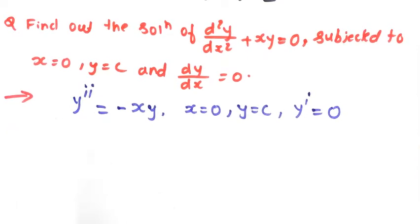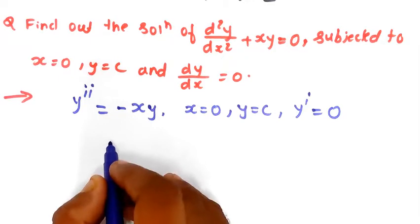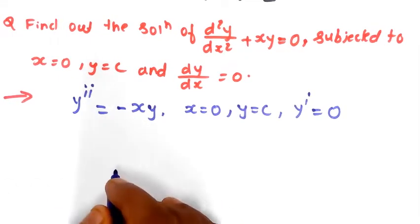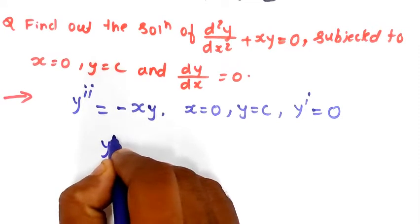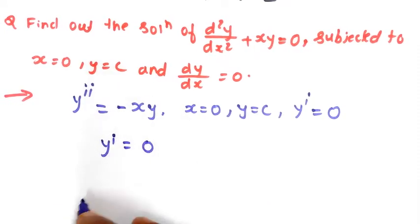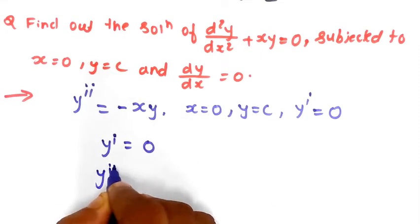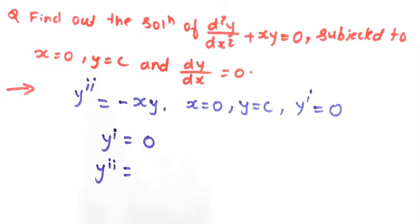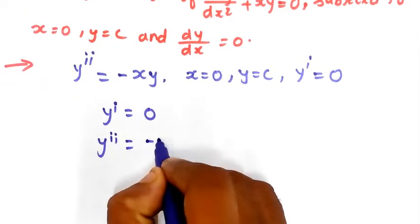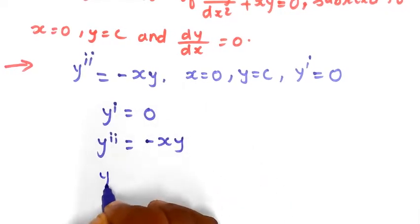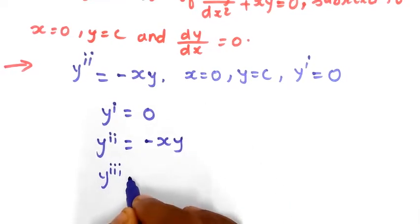Next, we have to calculate the values of higher derivatives of y. So y₁ = 0, and y₂ = -xy. Now for y₃, we need to differentiate y₂.